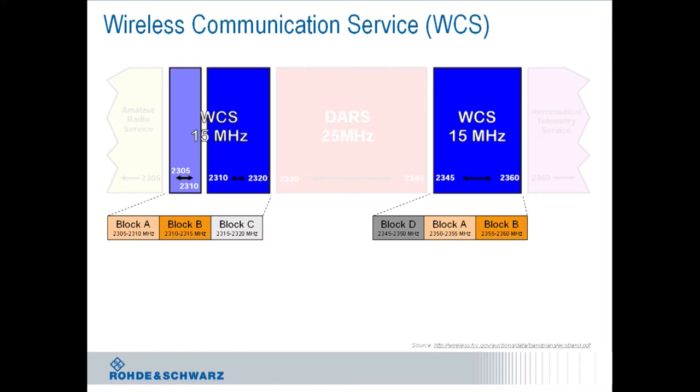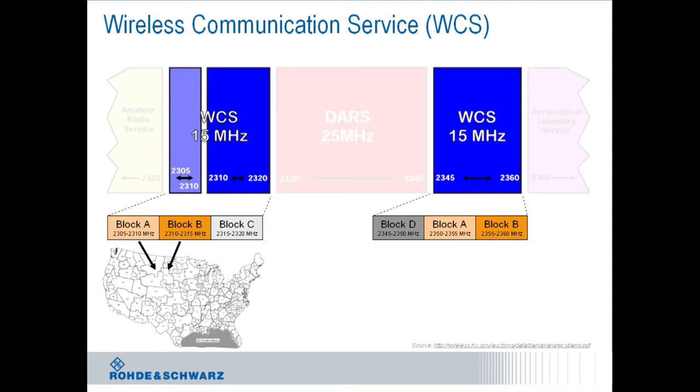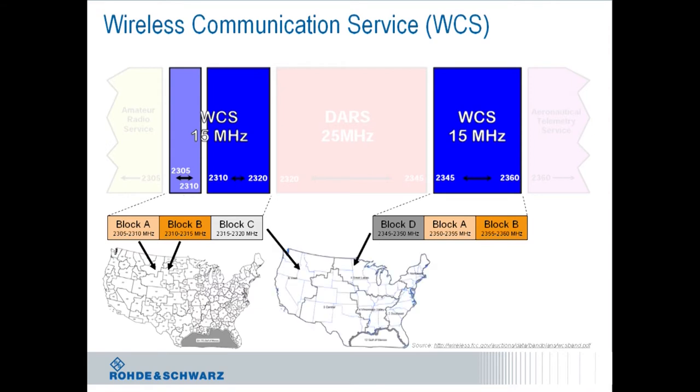For the 97 auction four blocks were created, A through D, where blocks A and B are paired spectrum. Blocks C and D is unpaired spectrum. Blocks A and B were auctioned using major economic areas as a geographical basis and 52 licenses were issued. Blocks C and D were auctioned based on regional economic area grouping comprising 12 licenses, but six licenses are enough to cover the entire continental United States. Major licensee is AT&T, as the news displayed earlier already suggests.